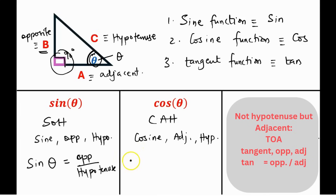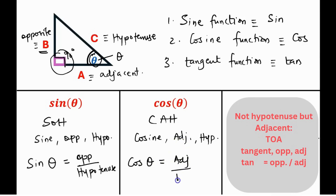Similarly, cosine of the angle of interest theta equals the adjacent side divided by the hypotenuse.